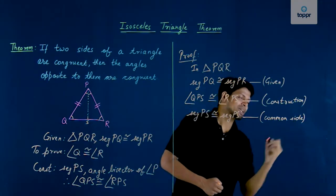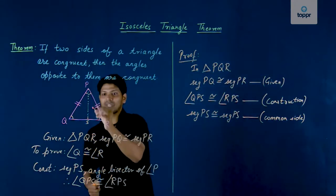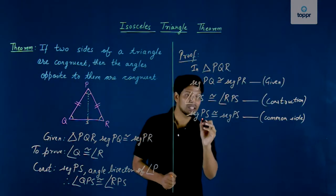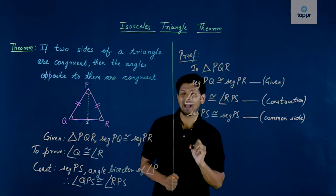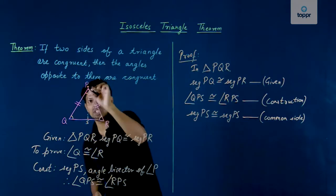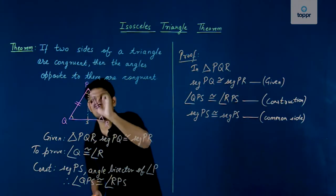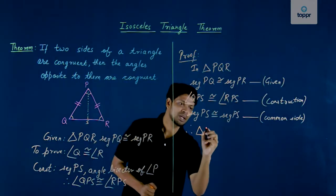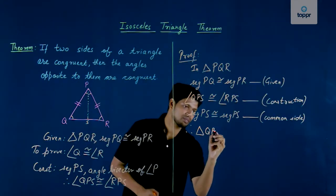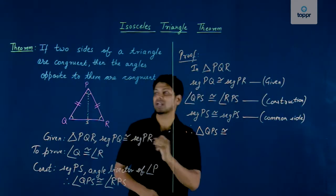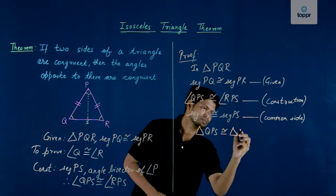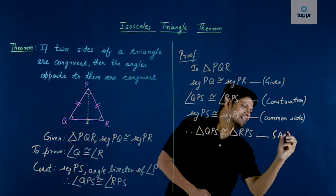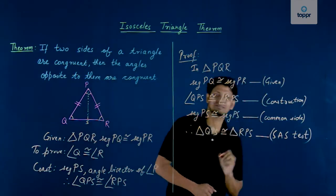The two triangles QPS and RPS have one segment congruent, another segment congruent, and the included angle between these two segments of both triangles is also congruent. Therefore, triangle QPS is congruent to triangle RPS by the Side-Angle-Side (SAS) test.